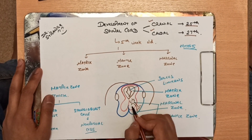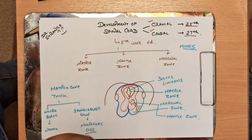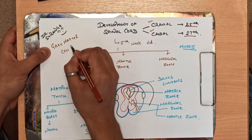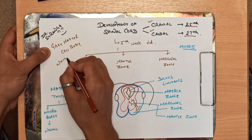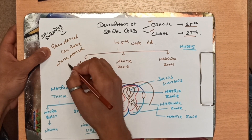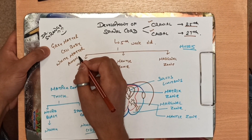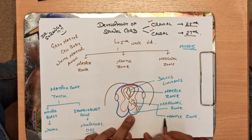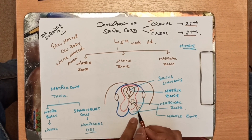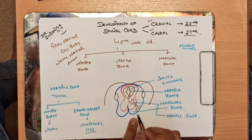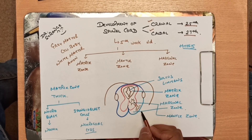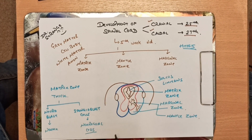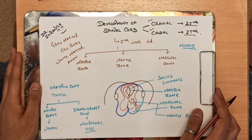This is the reason why the gray matter — as you might already know — contains the cell bodies of neurons, and white matter contains the axons of neurons. So, the mantle zone will develop into the gray matter and the marginal zone will develop into the white matter. The formation of gray matter takes place from the mantle zone.